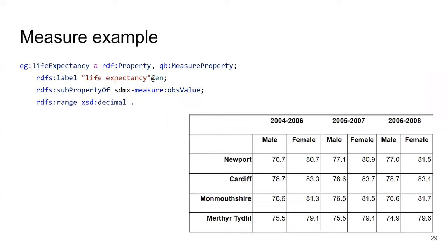Let's talk about measures. Here again, we need a predicate connecting the observation to the measured value. We create a new RDF property, because we want to be able to say the range is XML schema decimal — and it doesn't make sense to define this for all data cubes in the world, only for ours. But we still want people and machines to understand that this 'life expectancy' is actually an observed value — a measure property defined in SDMX. So we create the subproperty of relation here. Now we finally know what the number in our example is — it is the life expectancy.